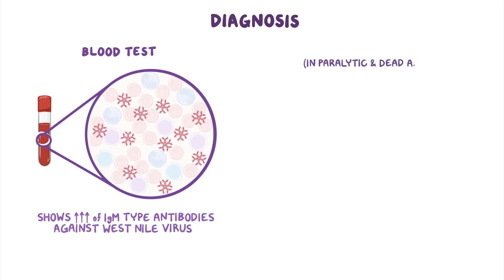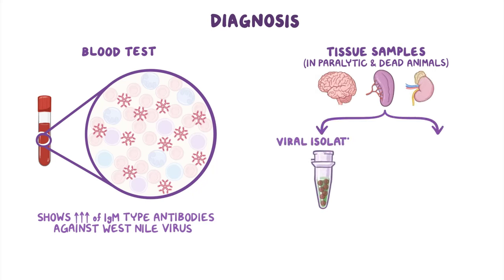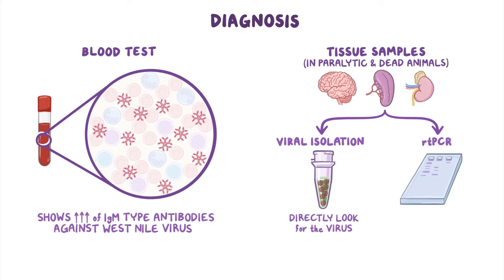In paralytic or dead animals, tissue samples are obtained from the brain, spleen, or kidneys, and viral isolation can be done to directly look for the virus. Alternatively, a reverse transcriptase PCR, or RT-PCR, test can be done to look for the viral RNA.